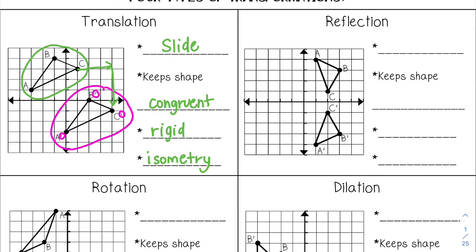The next type is a reflection, or a flip. It will also keep the shape congruent — it is rigid, it is an isometry. When you have a reflection, you're always going to have a line of reflection. In this case, my line of reflection would be the x-axis, so it was just flipped across the x-axis.